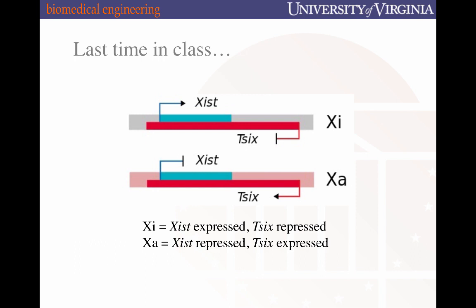Last time in class, you were introduced to two long non-coding RNAs that are expressed on opposite and overlapping strands of the X chromosome. Xist is the long non-coding RNA that enforces the inactive X state, and Tsix is an antisense long non-coding RNA that antagonizes the function of Xist and is expressed on the active X-allele.